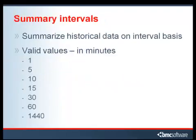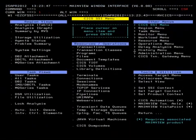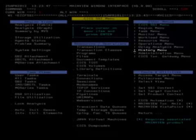Summary Intervals allows you to summarize historical data on an interval basis. Valid values are 1, 5, 10, 15, 30, 60, and 1,440 minutes. On the primary menu in MainView for CICS, in the upper right-hand corner, place your cursor on History menu and press Enter.